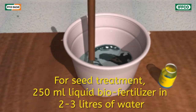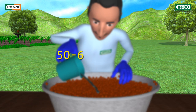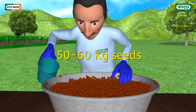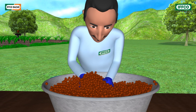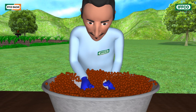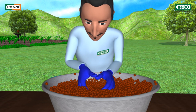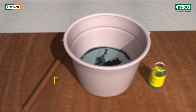For seed treatment, take 250 milliliters of liquid bio fertilizer and make a solution in 2 to 3 liters of water. Mix the solution slowly with 50 to 60 kilograms of seed by hand so that a homogeneous layer is evenly applied on all the seeds.